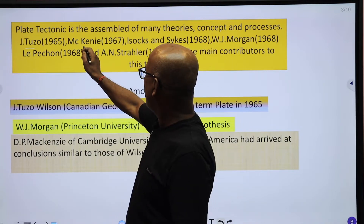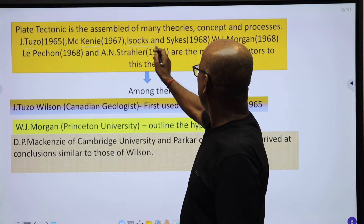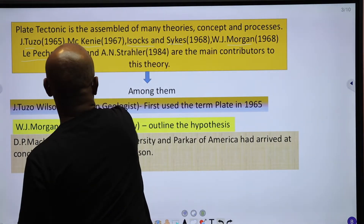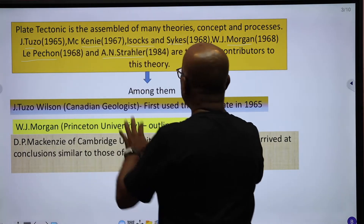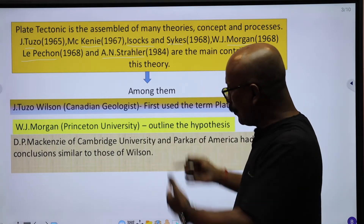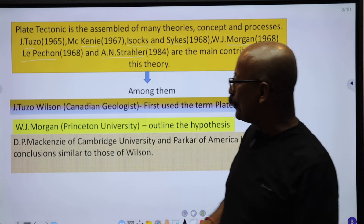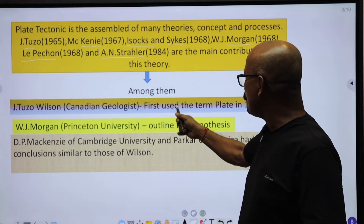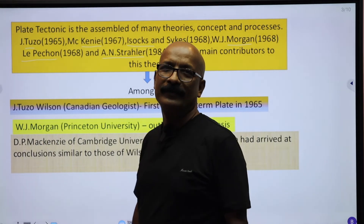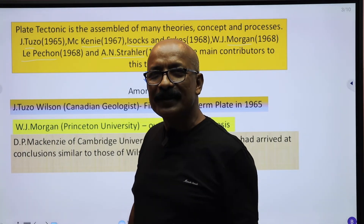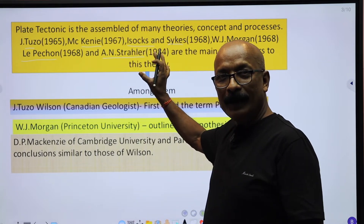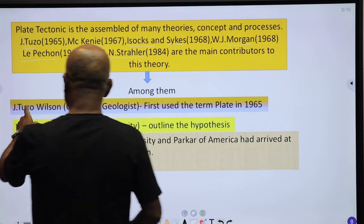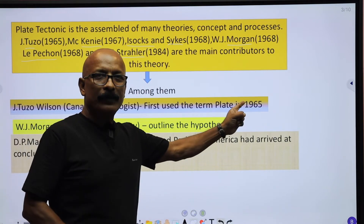J.T.U. Wilson, McKenney, Essex and Sykes, W.J. Morgan, Le Pichon, and A.N. Steller are the main contributors to this theory. For the first time, J.T.U. Wilson used the term 'plate' in 1965. They got the idea to describe this Plate Tectonic Theory.